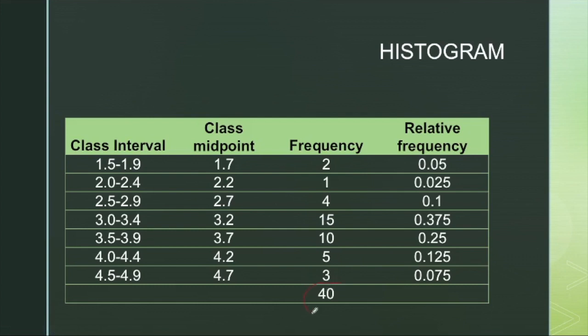And out of the 40, we can obtain the value 0.05. 2 divided by 40 will give us the value, and the same way we can obtain these relative frequency values.